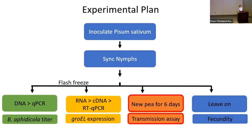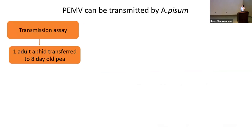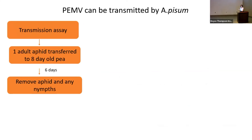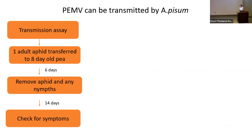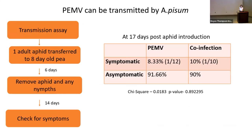For transmission, PMV can be transmitted by the pea aphid in the field. In the lab, we used one adult aphid transferred to a new eight-day-old plant in clip cages, allowed it to feed for six days, then removed it and any nymphs. We then allowed the plants to grow for 14 to 21 days, checking for symptoms. As of day 17 post-aphid introduction, one out of 12 PMV replicates and one out of 10 co-infection replicates were symptomatic. These values are not yet statistically significant, but we will continue monitoring for symptoms.